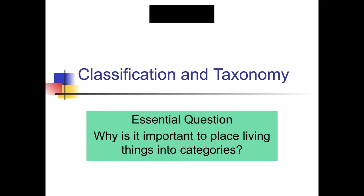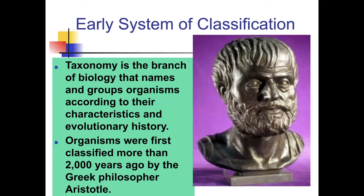Scientists classify living things in order to organize and make sense of the incredible diversity of life on planet Earth. Taxonomy is the branch of biology that names and groups organisms according to their characteristics and evolutionary history. Organisms were first classified more than 2,000 years ago by a Greek philosopher named Aristotle, though he was very limited in what he could classify and categorize, using a very simple system that in some instances didn't really work.